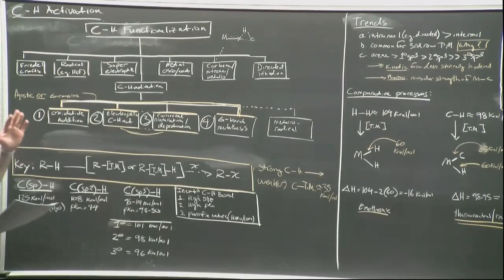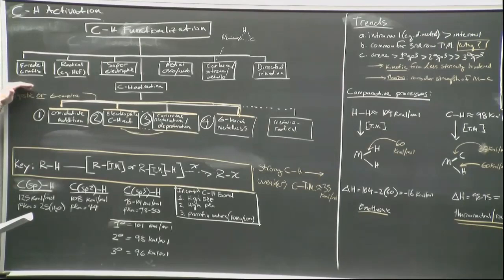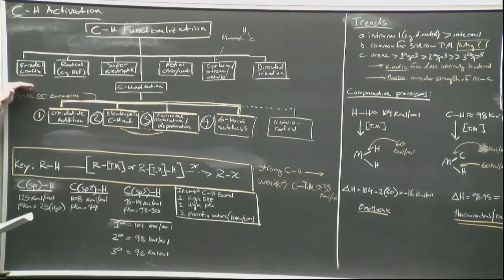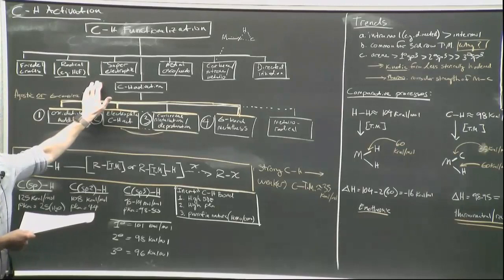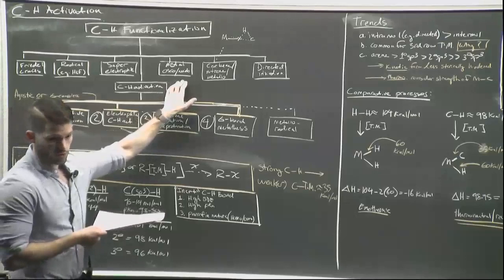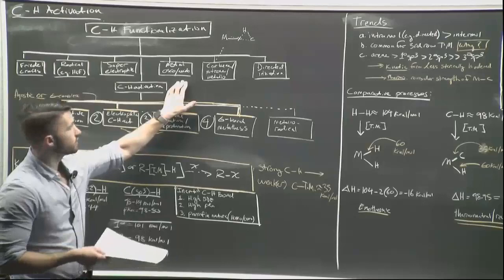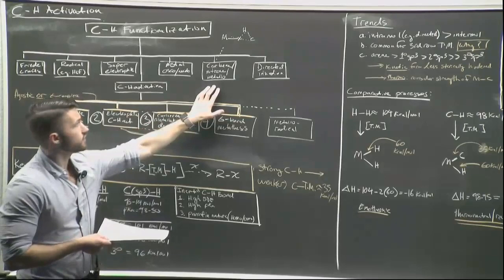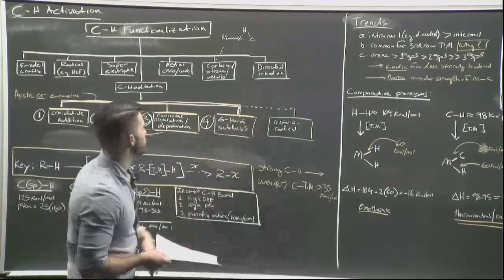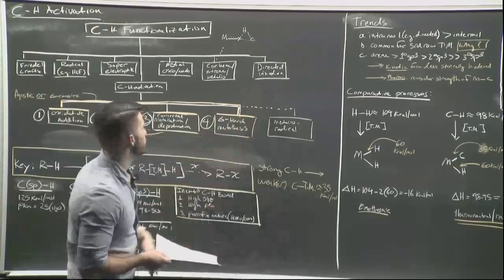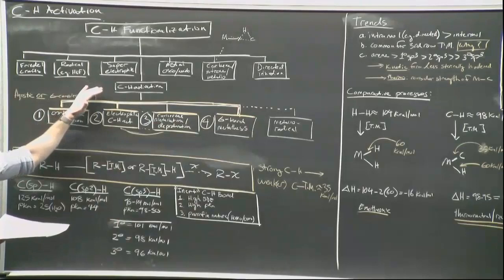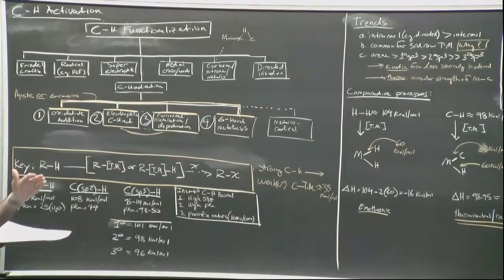If we look at the umbrella term of CH functionalization, there are many examples of converting carbon–hydrogen bonds into other things. Examples include Friedel–Crafts type chemistry of arenes, radical type reactions like the Hofmann–Löffler–Freytag reaction, superelectrophiles — really strong acids that can protonate C–H bonds of alkanes — metal-oxo and metal-amido chemistry involving hydrogen atom abstraction and recombination, carbene and nitrene chemistry involving insertion into a C–H bond, and directed lithiation.